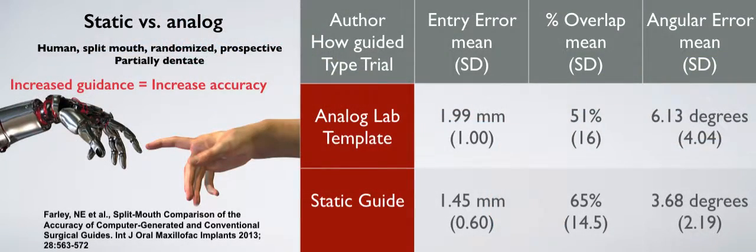This is a high level of evidence study done by Farley et al. It is a human split-mouth randomized prospective trial comparing partially dentate cases with analog model-based guide stents on one side and static guides made with CAD CAM on the other side. And the important measure to see here is the angular error mean which shows a statistically significant improvement when we go from analog lab stents to CAD CAM guide stents.